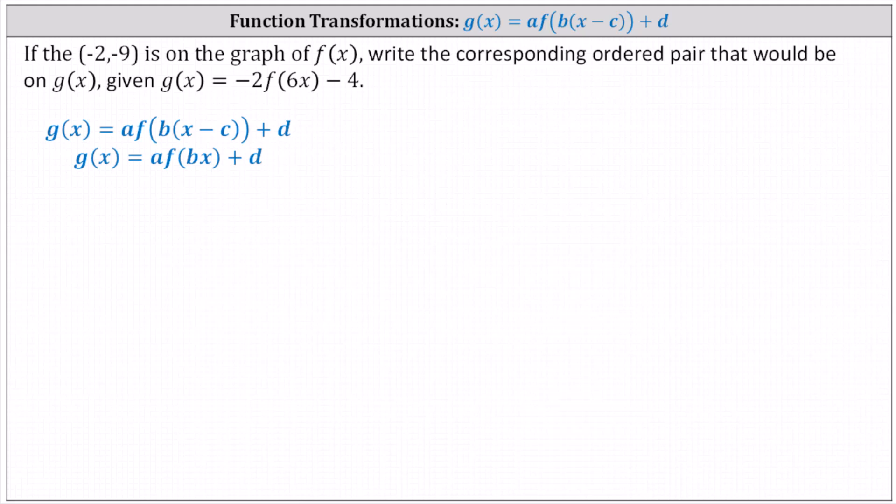If the ordered pair negative two comma negative nine is a point on the graph of f of x, write the corresponding ordered pair that would be on g of x, given g of x equals negative two times f of six x minus four.